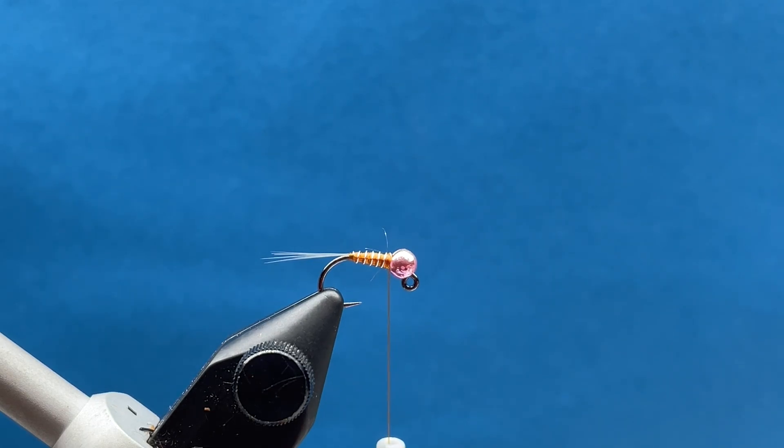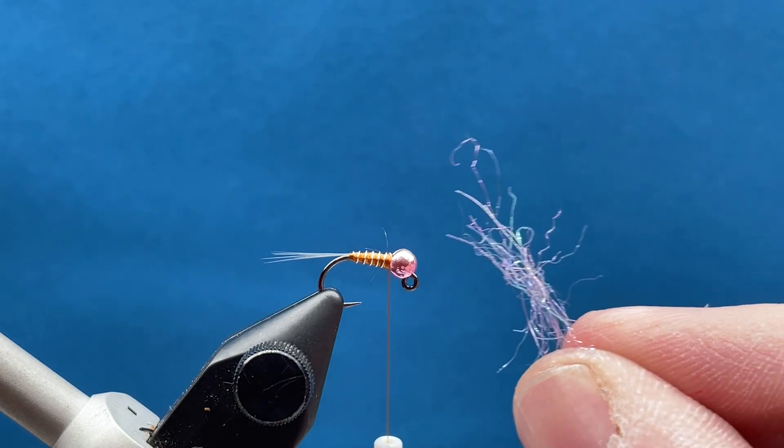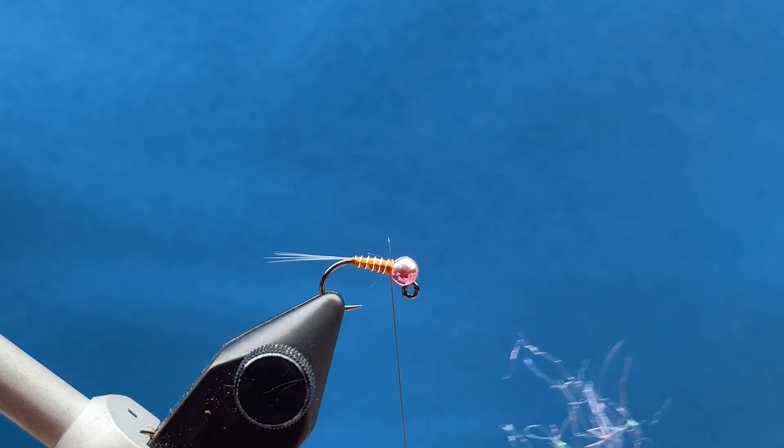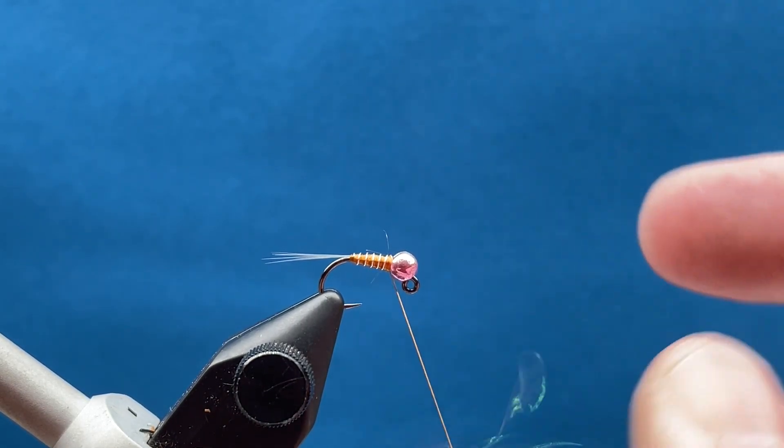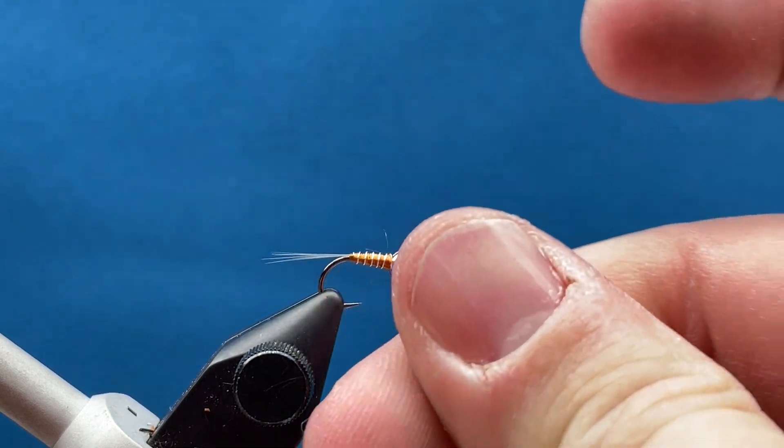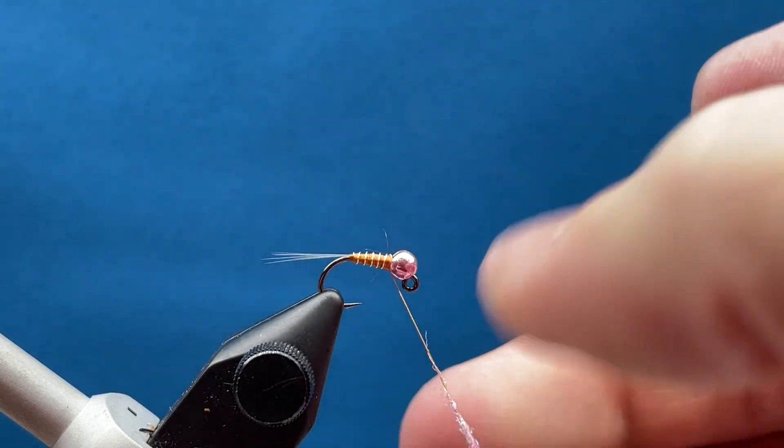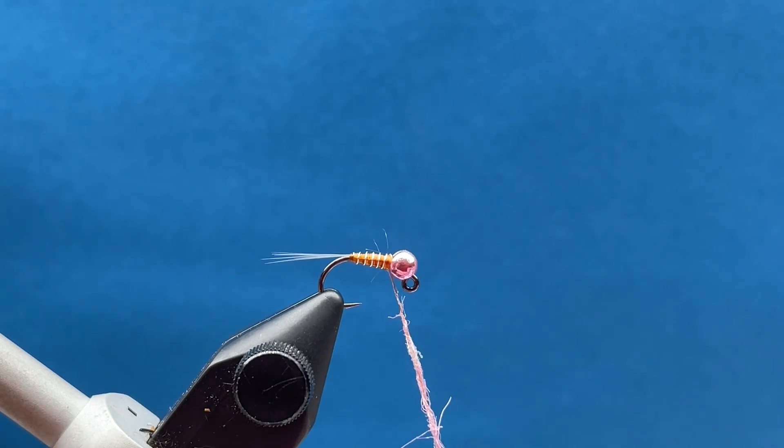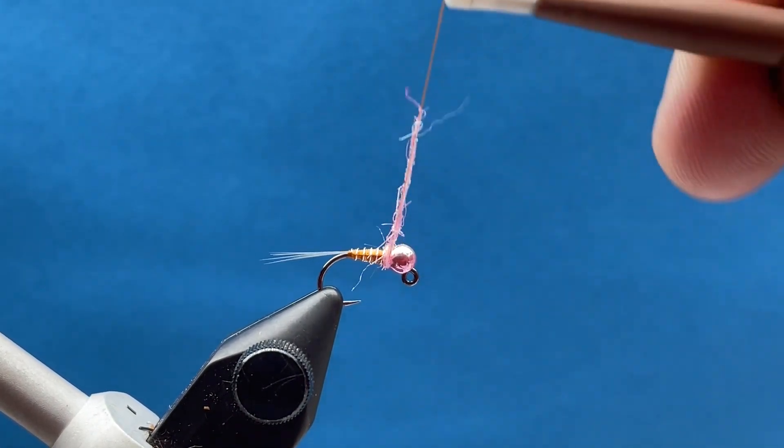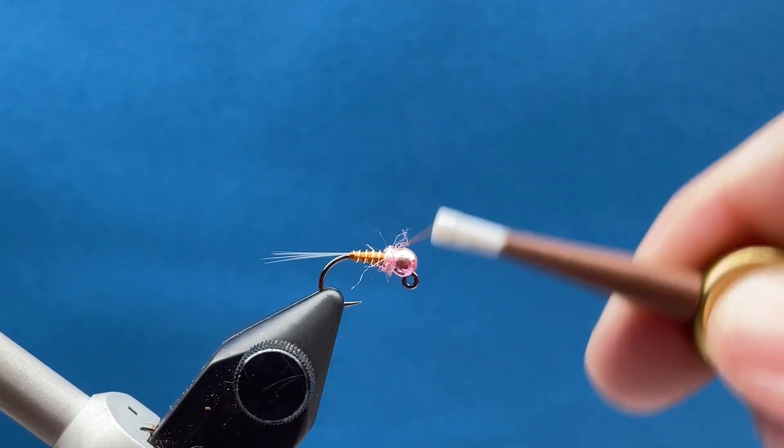This is just the pink color. You do not need a lot. I try to really keep this very sparse on these flies, just a nice little hint of a collar on it is all I'm looking for. I'll take that. I'm going to wrap that here, just three, four times is all you really need.